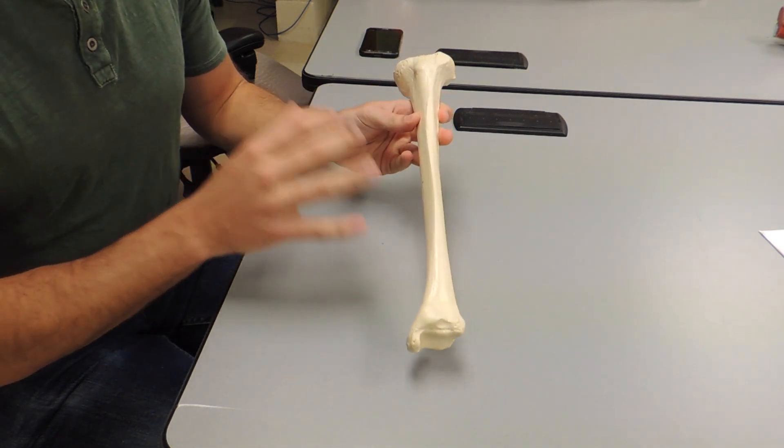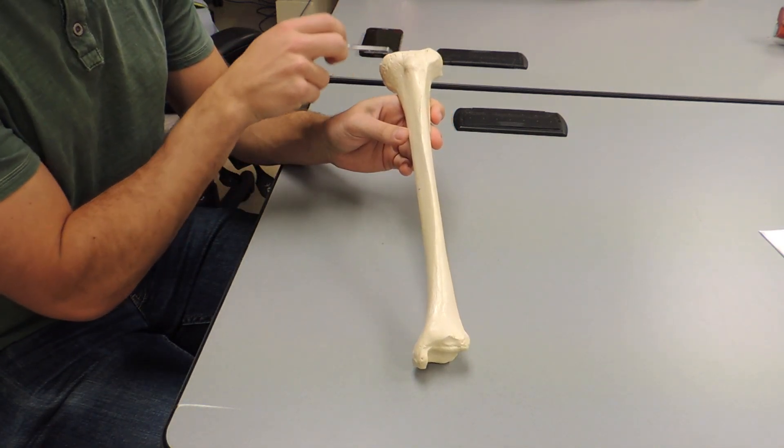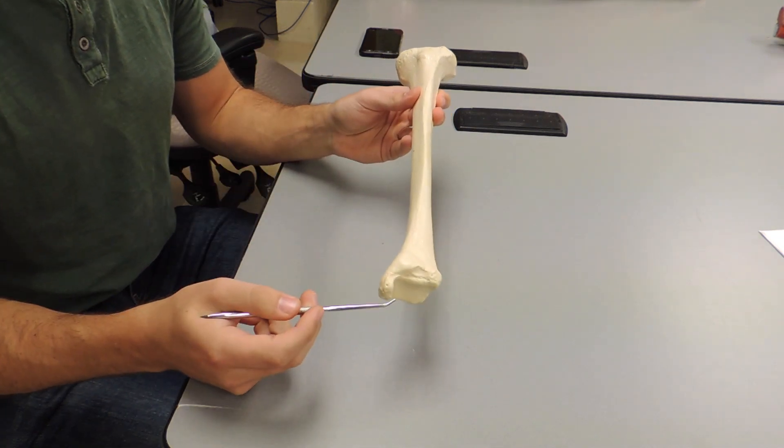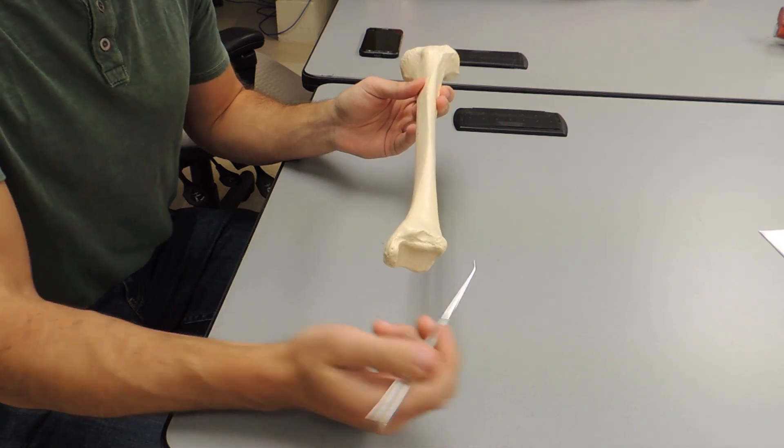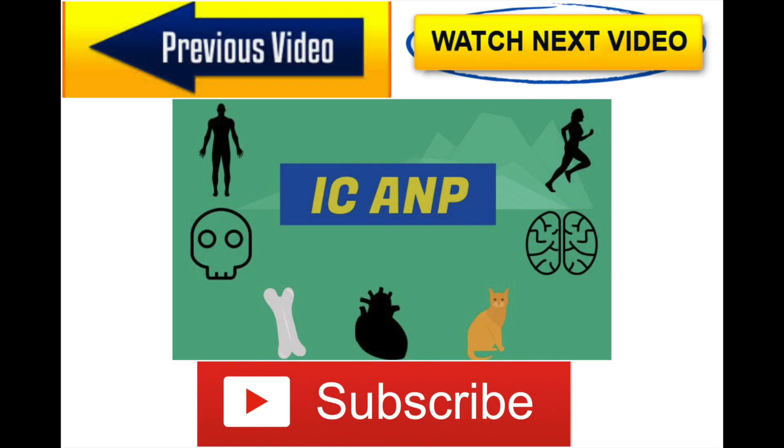So the tibia will articulate with the femur up here. So on the proximal end, it'll articulate with the femur. On the distal end, it will articulate with the talus and the fibula.